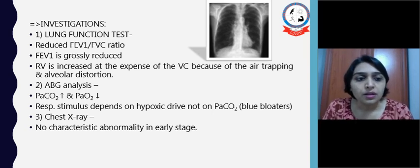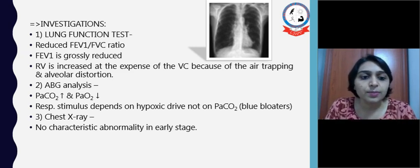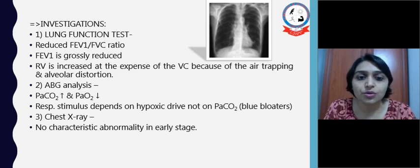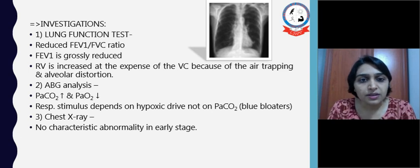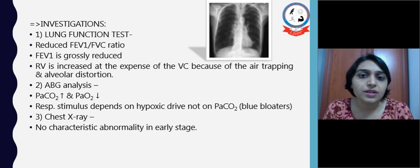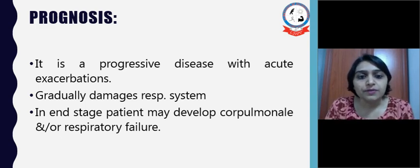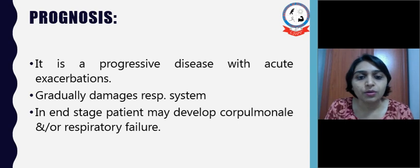ABG analysis shows PaCO2 is increased and PaO2 is reduced. Respiratory stimulus depends on hypoxic drive, not on PaCO2, which is typically seen in blue bloaters. On chest X-ray, no characteristic abnormality is found in early stages; later, changes similar to COPD may be found. Regarding prognosis: it is a progressive disease with acute exacerbations that gradually damage the respiratory system. In end-stage, the patient may develop cor pulmonale and/or respiratory failure.